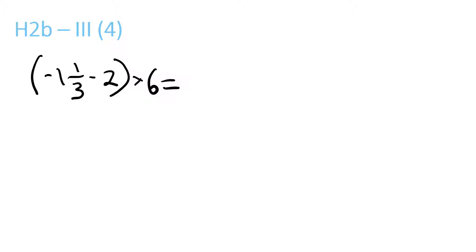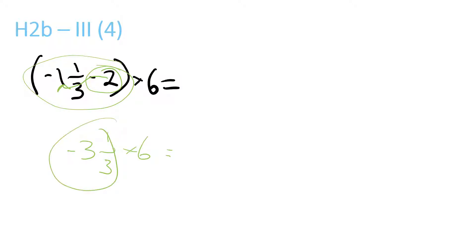Okay, Question 4. You've got to open up the brackets — solve the equation in the brackets first — so that equals minus 3 and 1/3, because it's a minus so you put the 2 over there, 1 plus 2 equals 3, so you put the minus times 6 equals. You'll change this into an improper fraction first, so minus 9 over 3 times 6, and you can simplify this.